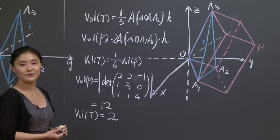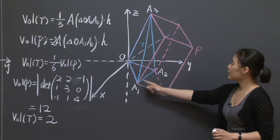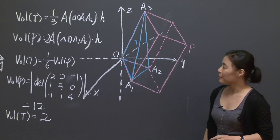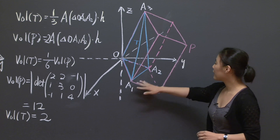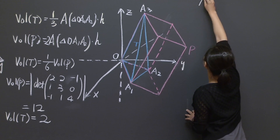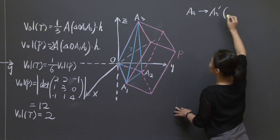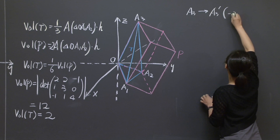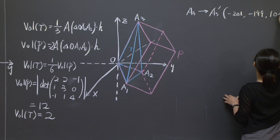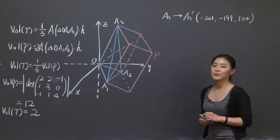Did you get the correct answer? So to compute the volume of T, we related it to the parallelepiped P which contains T. Now let's look at the second part. If we keep A1 and A2 unchanged but move A3 to a new point A3' with coordinates (-201, -199, 104), I'm asking you to compute the volume of the new tetrahedron.